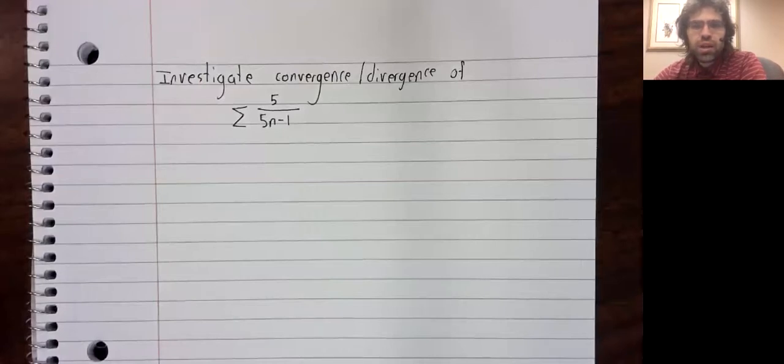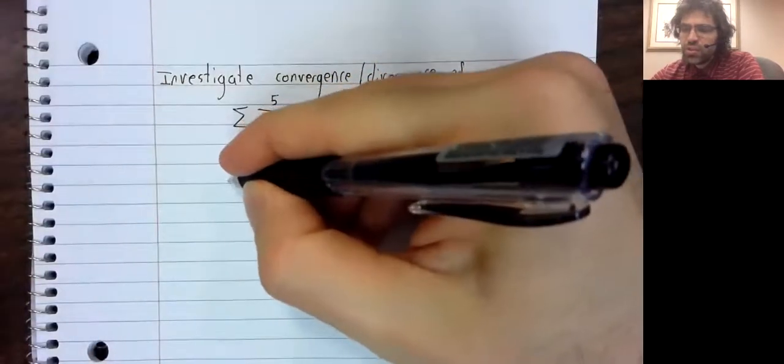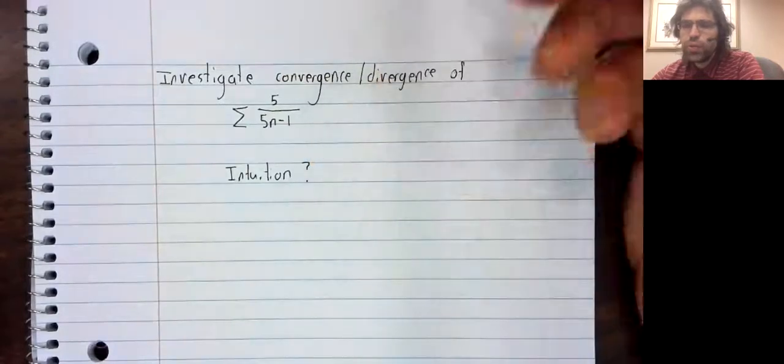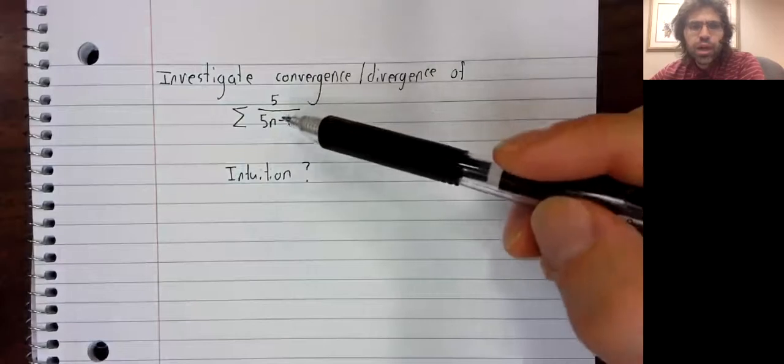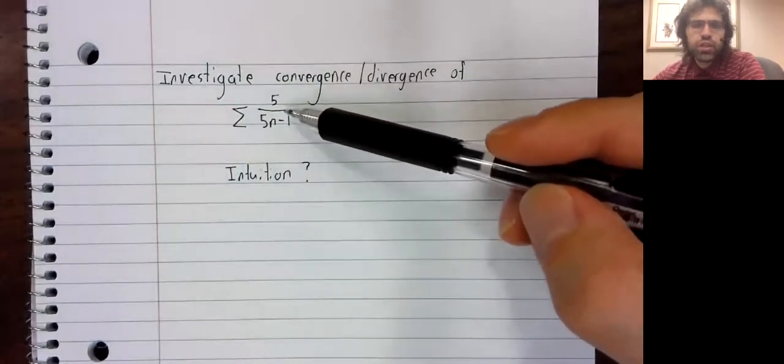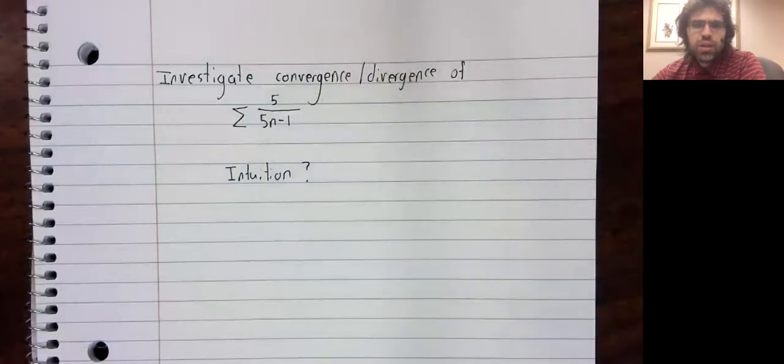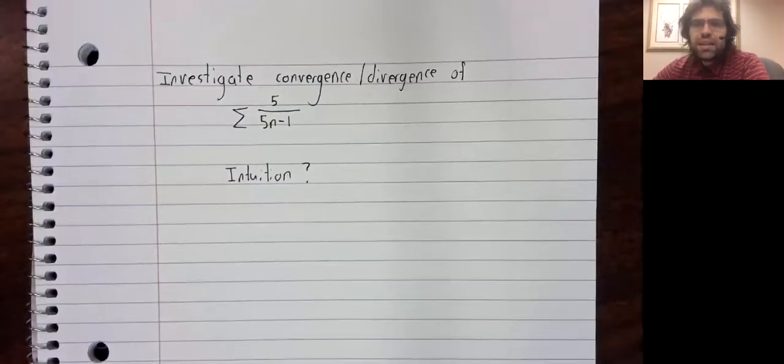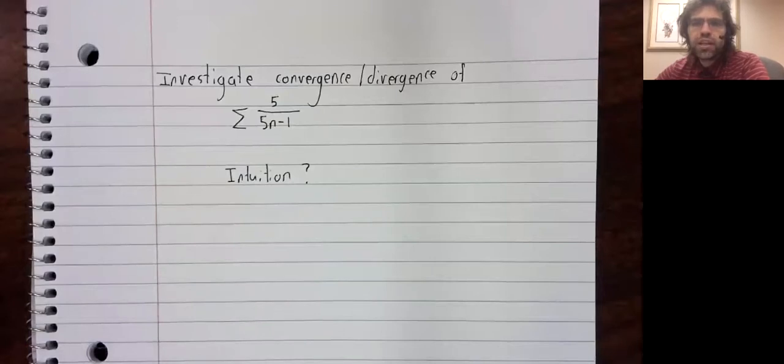A downside of the comparison test is that to use it, we really need to have some intuition going in about whether this series converges or diverges. Because to use the comparison test, we need to do one of two things: find a larger convergent series, or find a smaller divergent series. And if we don't go into this with any intuition, we won't know which of those we're trying to do.